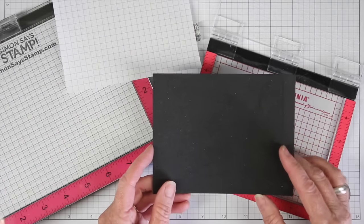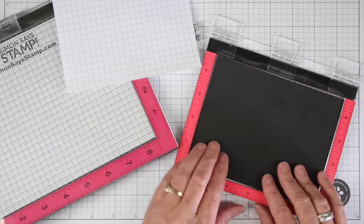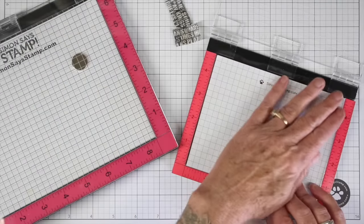So when you're using a cling mounted stamp, you're going to remove the foam. And if you're using clear stamps, you're going to go ahead and use it with the foam.